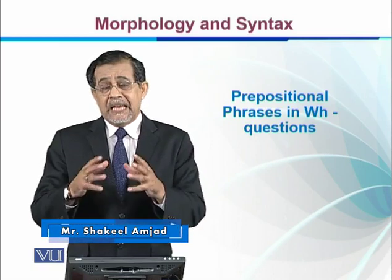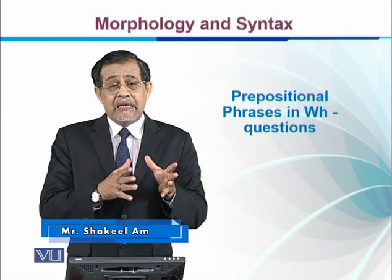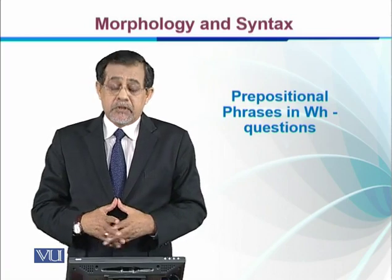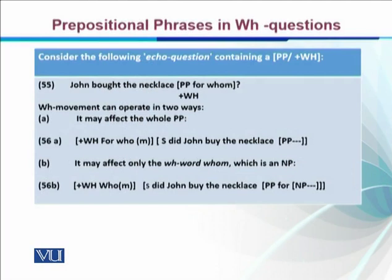So how do we deal with this? As we have seen so far, all WH elements tend to come to the beginning or the initial position of the sentence. For example, the echo question: 'John bought the necklace for whom.' Here, instead of 'her,' it is 'for whom,' so it's a preposition with a WH question, and we have to move this WH element to the initial position.